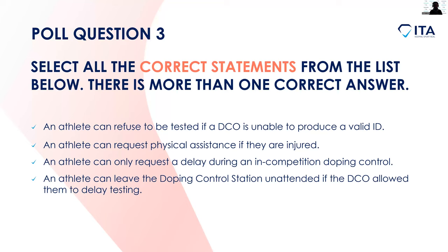60% and more have voted, so let's close the poll and take a look at the answers. The first two answers are the most popular and they are also the correct ones. Answer three is not correct — delays can be granted for valid reasons in out-of-competition testing too. And answer four is not correct either, as an athlete can leave the doping control area if the DCO has agreed to a delay, but — and this is the important part — they must be accompanied at all times.